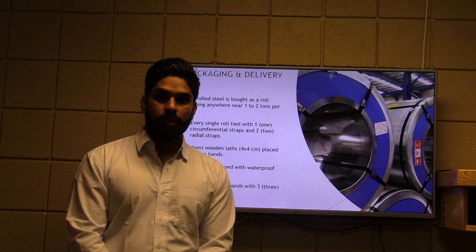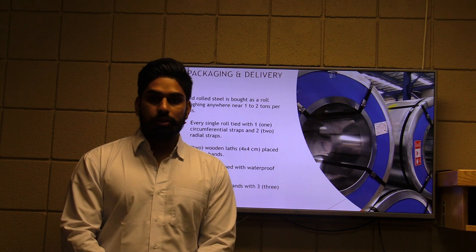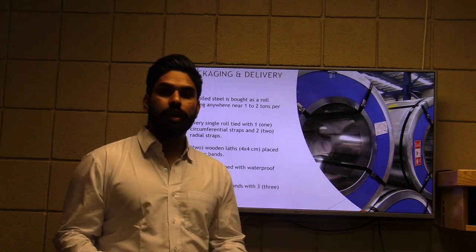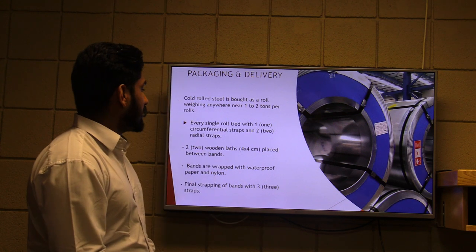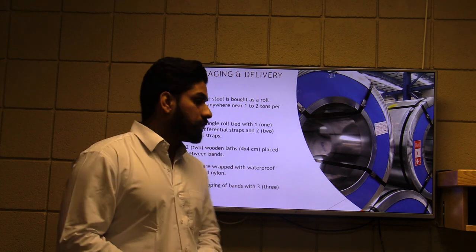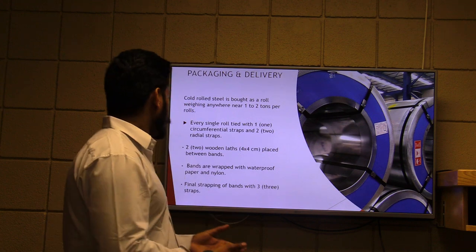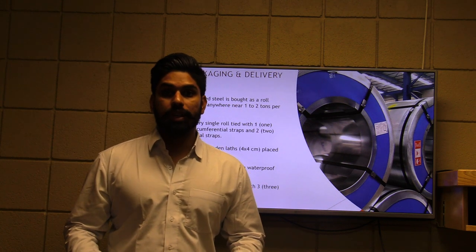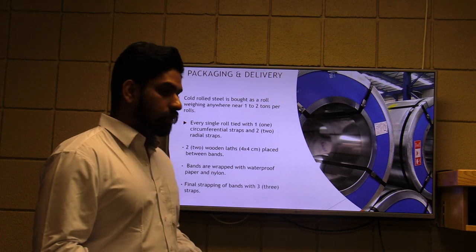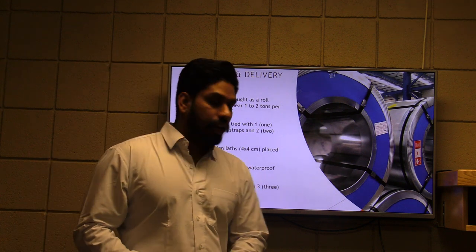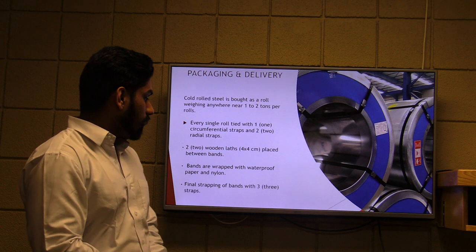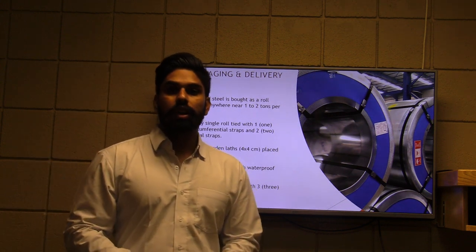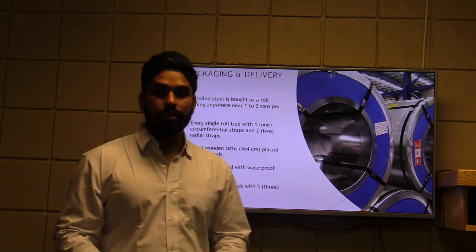The main concern is delivery and packaging. For delivery, the transportation department usually uses wraps and straps. One bundle will weigh between one to two tons. A single roll will be tied with circumferential and radial straps — one circumferential strap and two radial straps. Two wooden laths will be used to prevent skating, and ends should be waterproofed to prevent corrosion using paper and nylon. For final wrapping, the department needs to use three straps. All three suppliers will use this method for packaging.